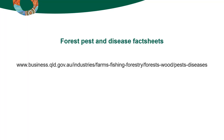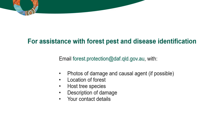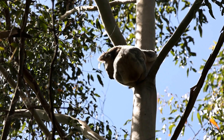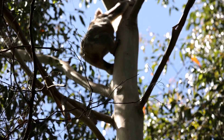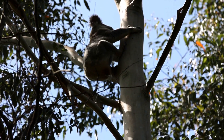If you suspect you have a forest pest or disease problem and you have some idea of what it is, you can find further information in the pest and disease fact sheets on the Queensland Government website. If you need further assistance with identification, send an email to forest.protection@daf.qld.gov.au with photos of the damage and causal agent if possible, location, host, description of damage and your contact details. By being vigilant and reporting anything unusual in your native forest or plantations, we can help to keep Queensland's forests healthy for future generations.